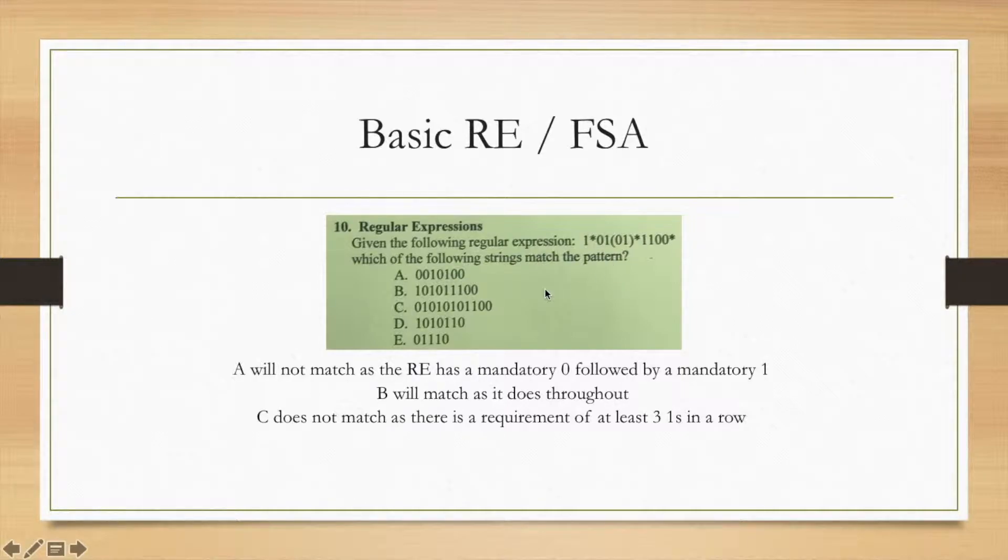For C, it's not going to match. There's a requirement of at least three ones in a row. This can be seen if you ignore this—it'll be a required one, a required one, and a required one. If you do use that infinite number of zeros, there will be a one at the end of those zero ones and then a required one and a required one. So there are three required ones. There's not that in C, nor is there in D. Finally, you can look at E, and if you take out all of the asterisks, the optional things, it just becomes zero one one one zero, which matches E. That means that B and E will work.